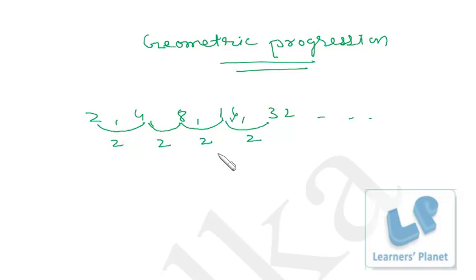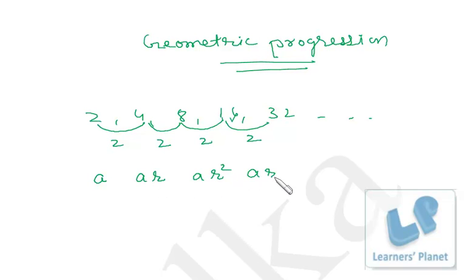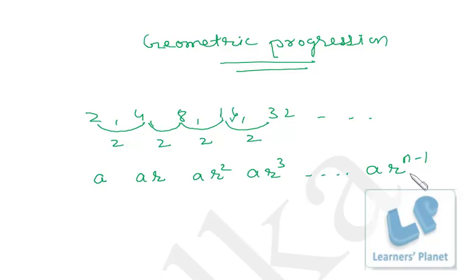Suppose the first term of a GP is a, then the second term will be ar (common ratio r), the third term will be ar², the fourth term ar³, and similarly the nth term will be ar^(n-1). Why n-1? In the second term the power is 1, third term is 2, fourth term is 3, so in the nth term it is n-1. So the nth term of a GP is ar^(n-1), where r is the common ratio and a is the first term.